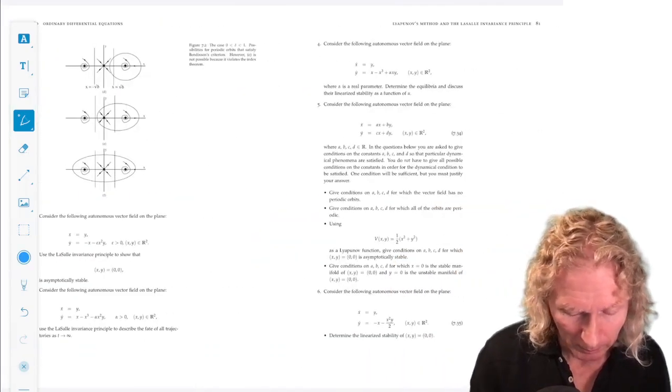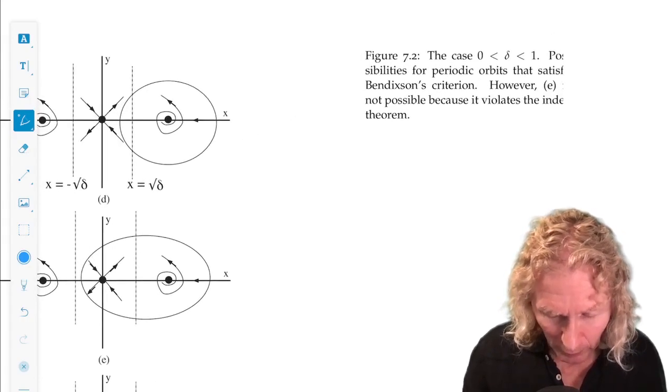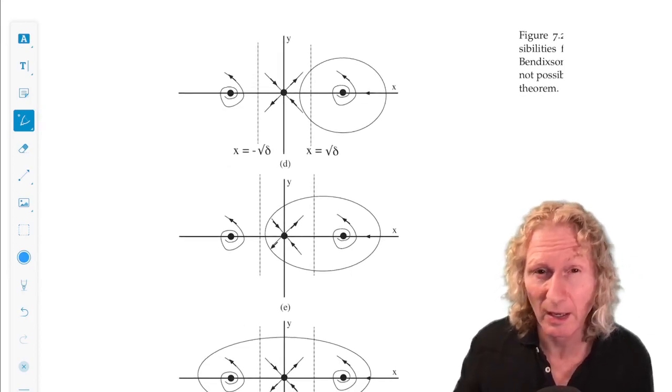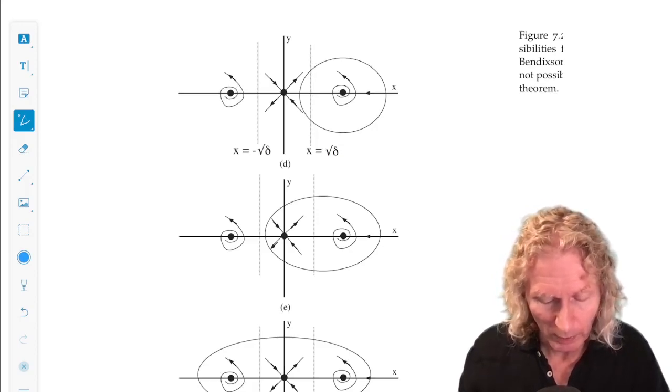And now we look at the other case. 0 less than delta less than 1. So the vertical lines have moved inside the fixed points. And now what can we have?